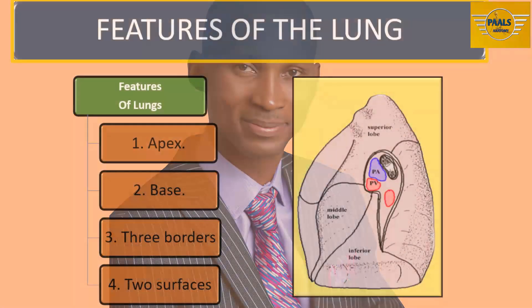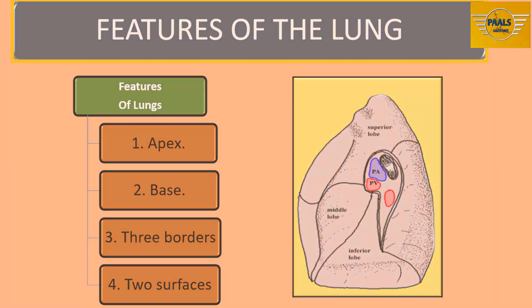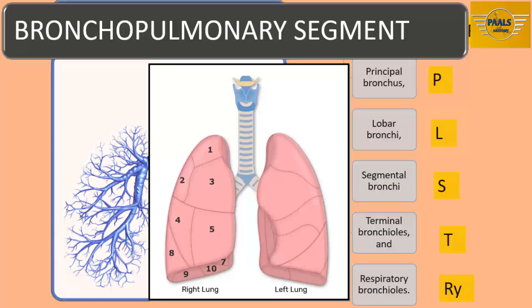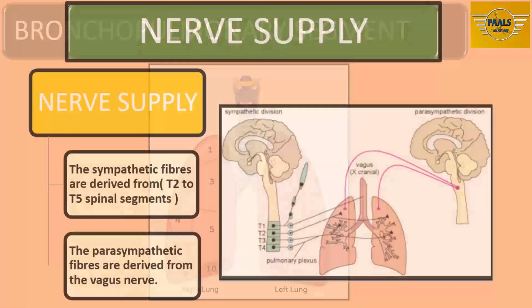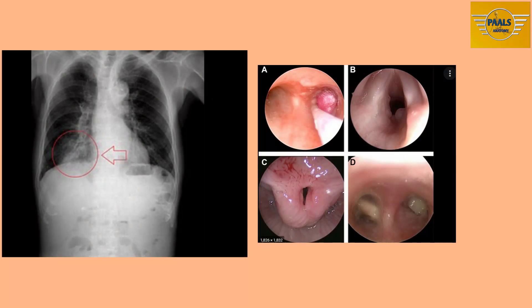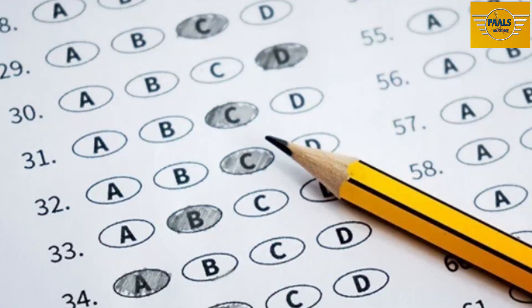This lecture is divided into three parts. Part 1, which you're watching now, will be focused on the basic anatomical features of the lungs. Part 2 will be on the bronchial tree, bronchopulmonary segments, and innervation and blood supply to the lungs. Part 3 will be on applied anatomy of the lungs and clinical correlates. We will also answer some multiple choice questions from various examination boards on the lungs. So let's go to class.